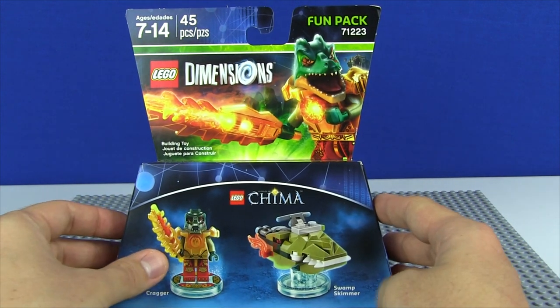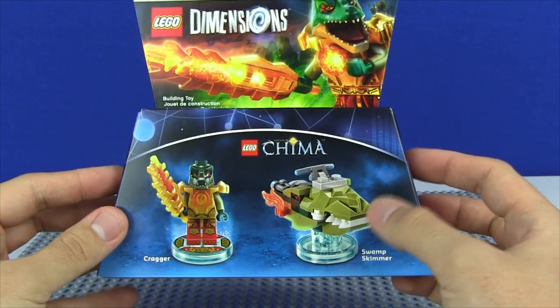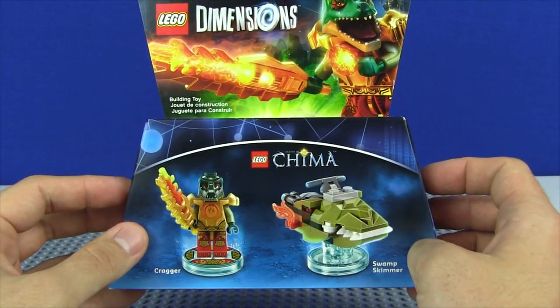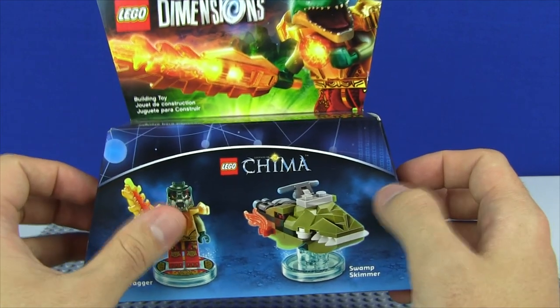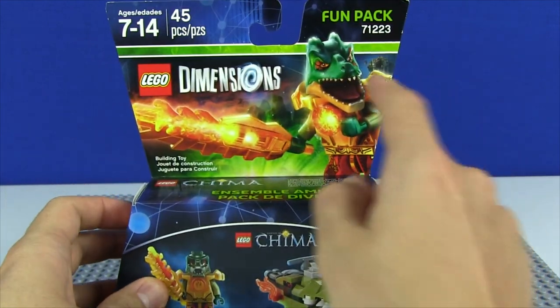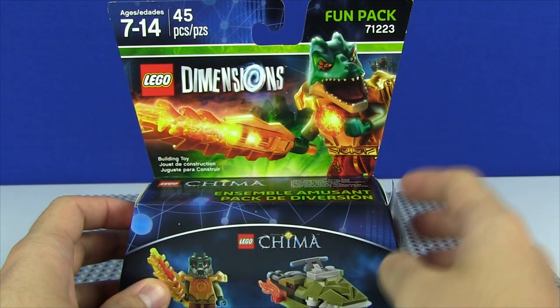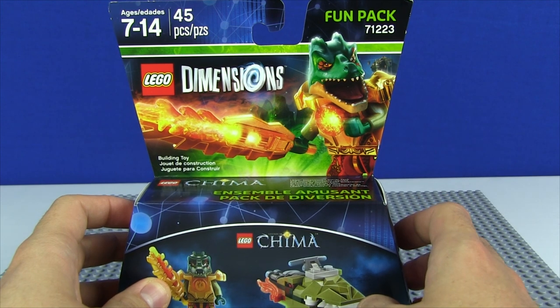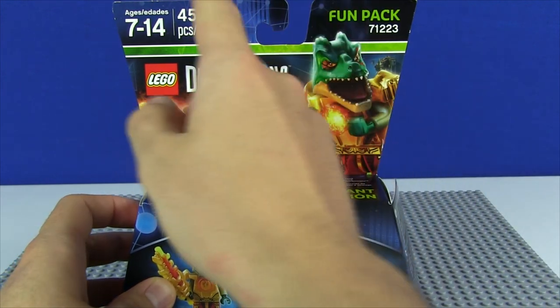And that is Kragger along with his Swamp Skimmer, which looks very cool. It's got this kind of crocodile-like motif going on, which is super neat, of course, to go along with Kragger the crocodile. On top of that, we get a really nice shot of Kragger looking very dynamic right there as he is ready to rule over the lands of Chima.